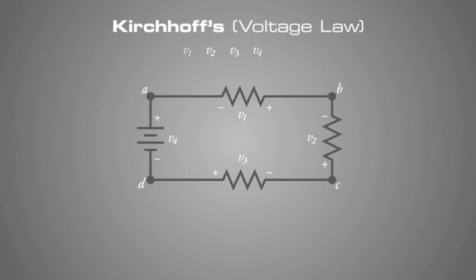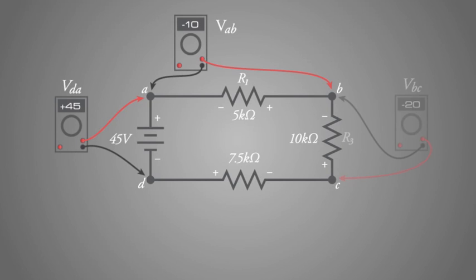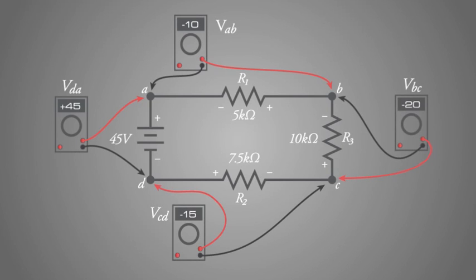If we were to take voltmeters and measure the voltage drop across each resistor, stepping around the circuit in a clockwise direction with the red test lead of our meter on the point ahead and the black test lead on the point behind, we would obtain the following readings.